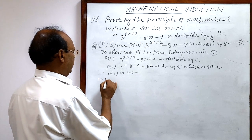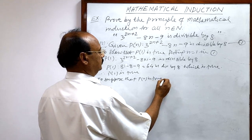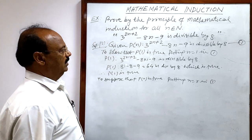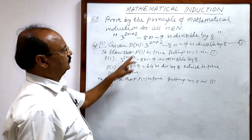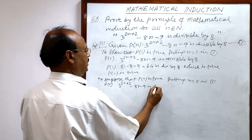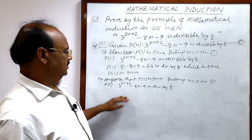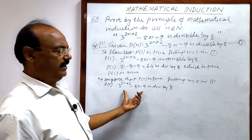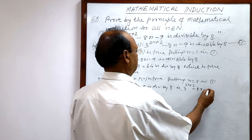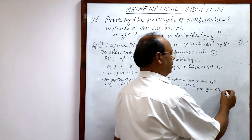The second step is to assume that P(R) is true. We get P(R) by putting n equal to R in the statement. So P(R) is: 3 to the power 2R+2 minus 8R minus 9 is divisible by 8. Since 8 is a factor, we can write 3 to the power 2R+2 minus 8R minus 9 equals 8K, where K is any positive integer. Let this be relation number 2.